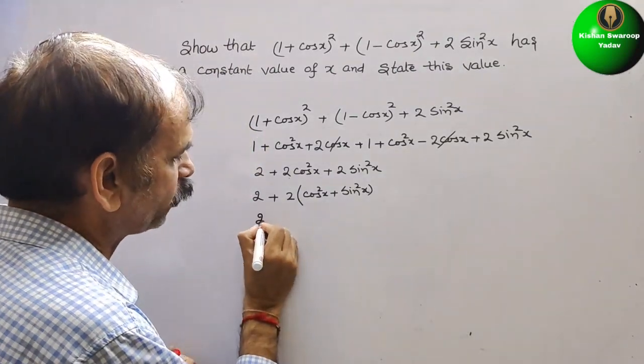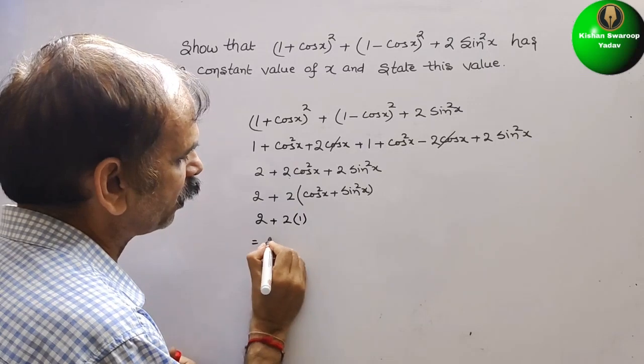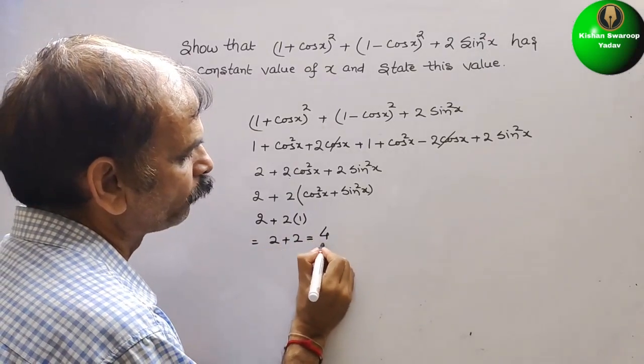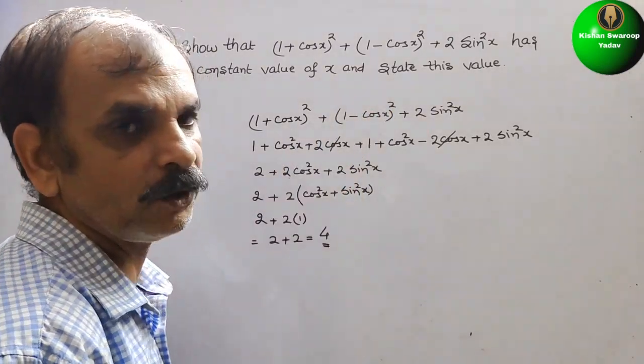So therefore, it will be 2 + 2×1, that is equal to 2 + 2, that is equal to 4. So this is your answer for this, this is the value for that.